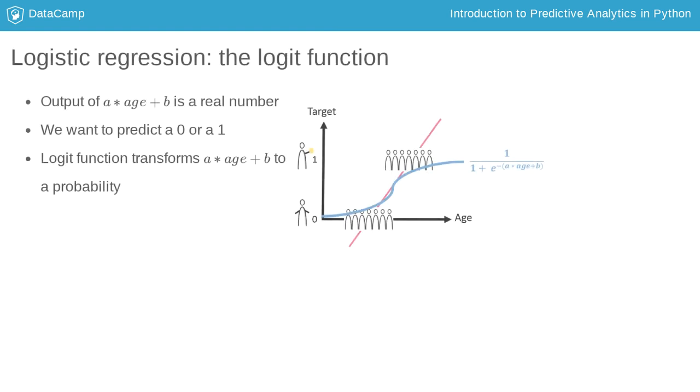The regression line constructed can be used as a predictive model. However, the output is a real number that can be anything. It would be more convenient to obtain a probability as output, a number between 0 and 1 that expresses how likely it is that someone will donate.